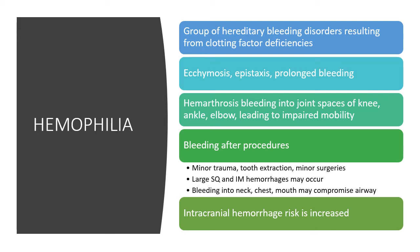Hemophilia A, also called classic hemophilia, is a deficiency of factor VIII and accounts for 80% of cases, affecting about 1 in 5,000 males. Hemophilia B, also called Christmas disease, is caused by a deficiency of factor IX and accounts for about 15% of cases. There are also other rare types and von Willebrand bleeding disorders from clotting factor deficiencies. Regardless of type, patients bruise easily, bleed easily with epistaxis, and have prolonged bleeding.